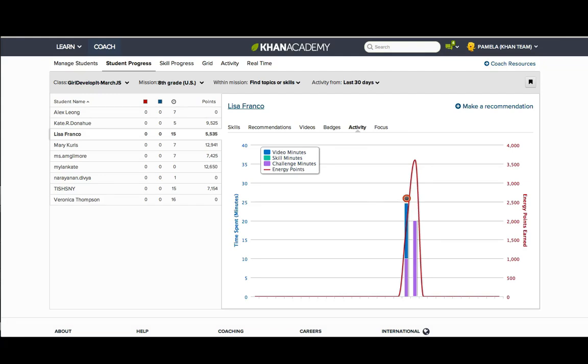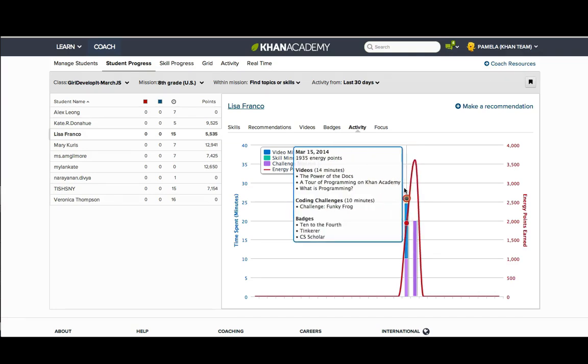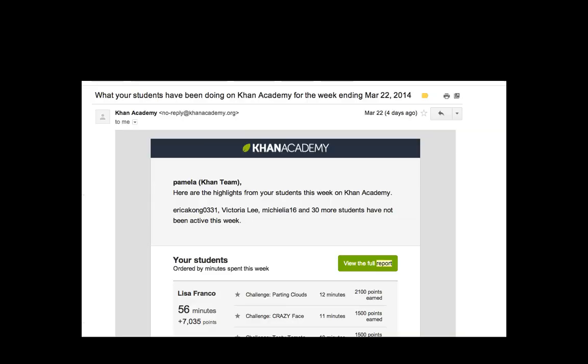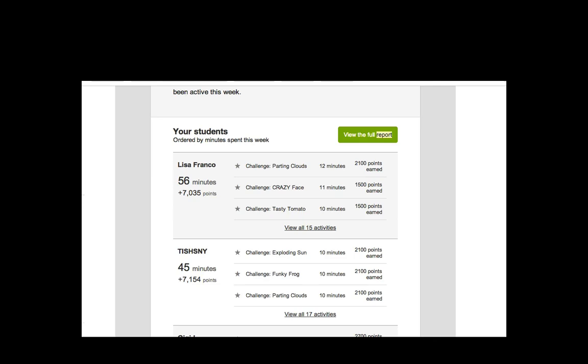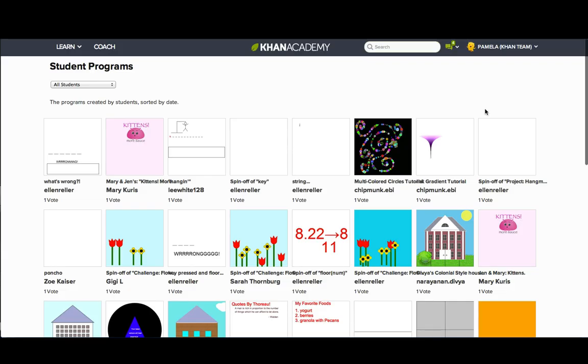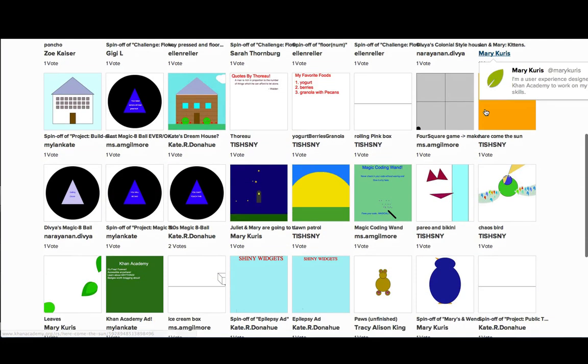As a programming teacher, you also have multiple ways of tracking your students' activity. For example, you might check out their activity graph and find out what coding challenges they've completed or talk-throughs they've watched. You might get the email every week that says what your students have been up to that week. And you can also look at all the programs that your students have been making.